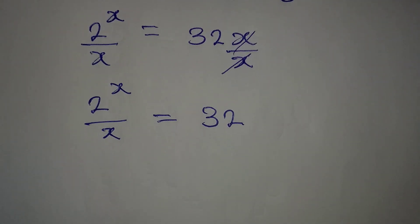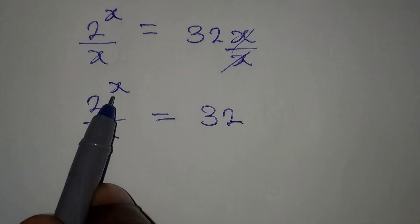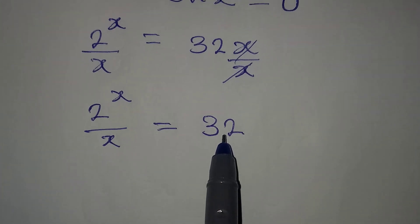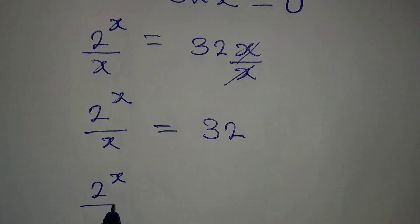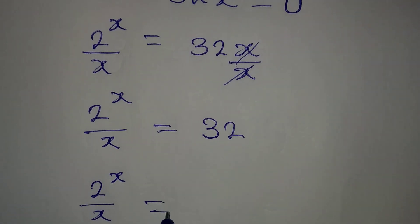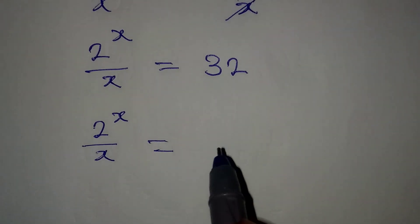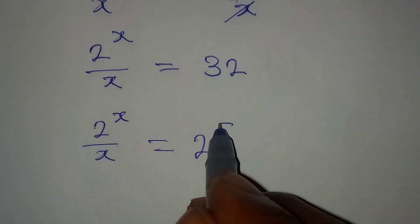And then, look at something. Because we have 2 to the power of x, we can express 32 in index form. So we have 2 to the power of x over x, and this will be equal to 2 to the power of 5.